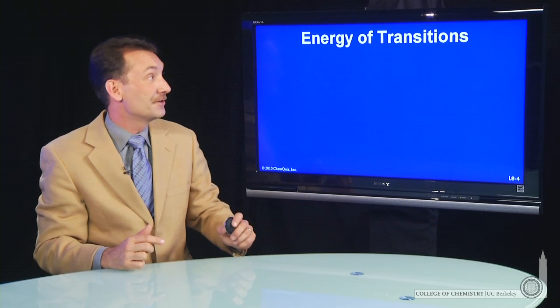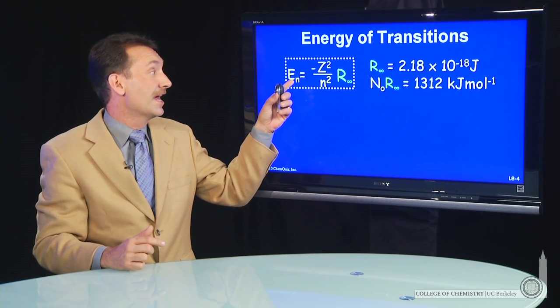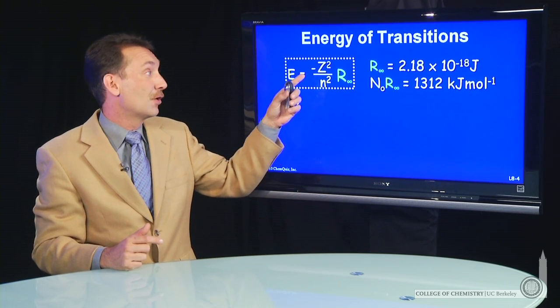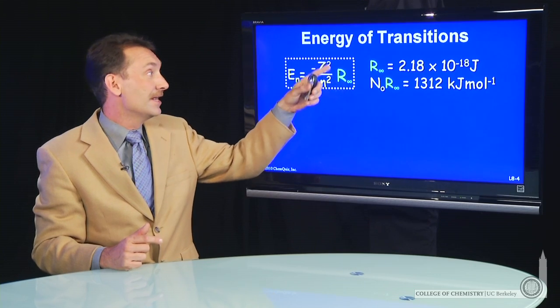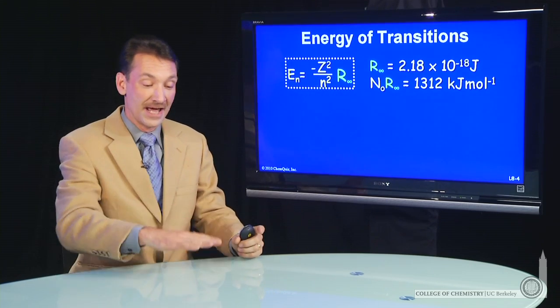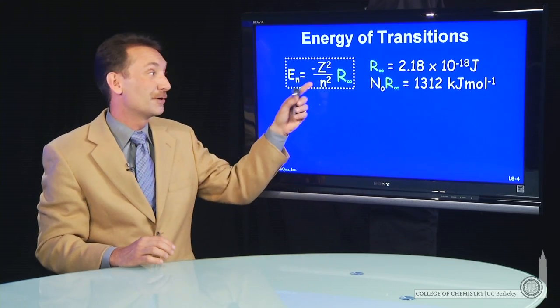Let's look at those photon energies. The energy levels in the atom go as z squared over n squared, R infinity. This quantity tells us the energy level based on n, the principal quantum number.